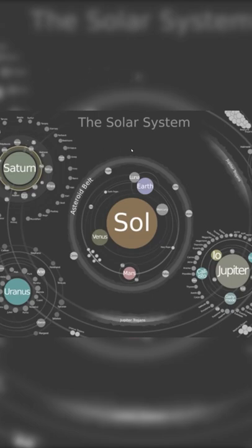Map of the solar system, but what's interesting about this is that it breaks down all of the moons that some of the gas giants have.